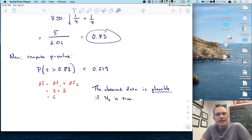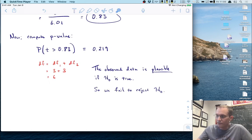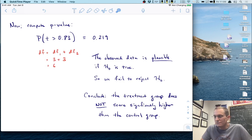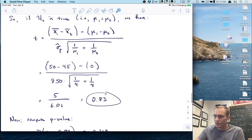The observed data is plausible if the null is true, so I fail to reject the null. I can't throw out the null - the data could have occurred. Our conclusion is that the treatment group does not score significantly higher than the control group. We actually still have some support for the null in this case.